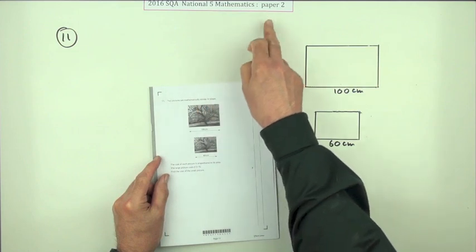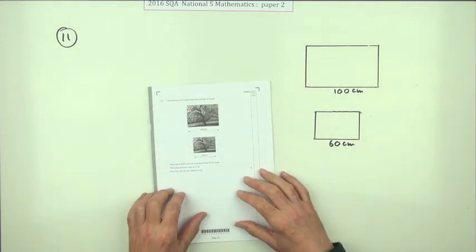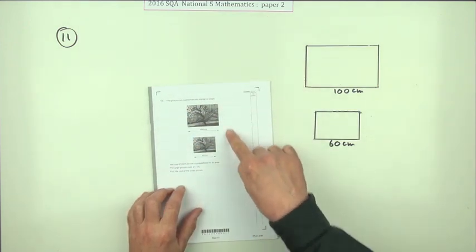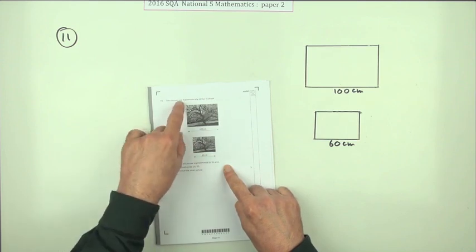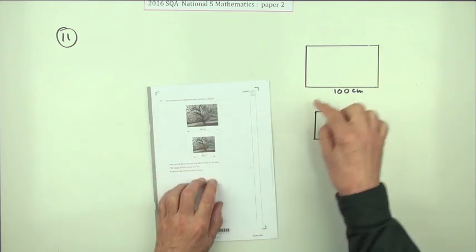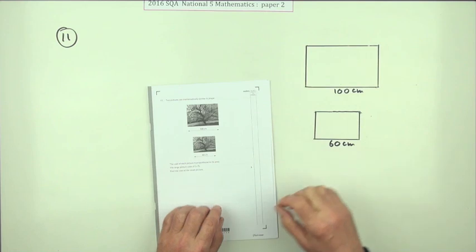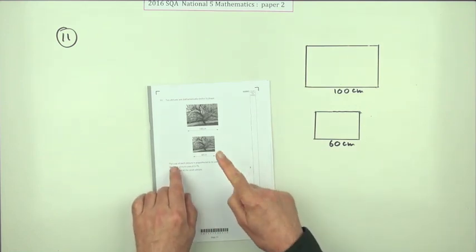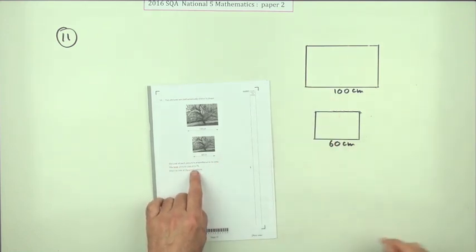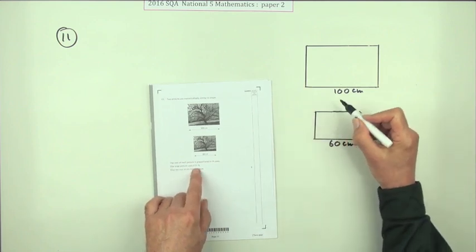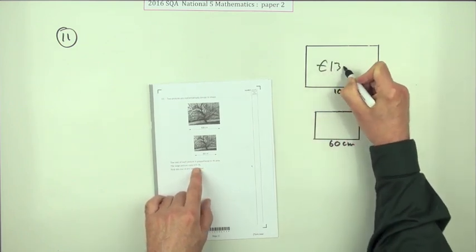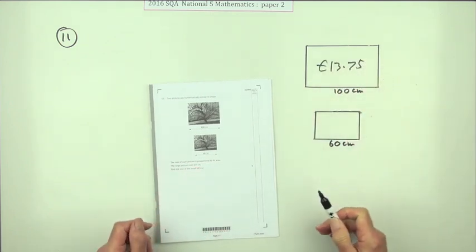Number 11 from paper 2 of the 2016 National 5 Maths exam. Similar shapes: two pictures are mathematically similar, meaning corresponding sides are in the same ratio. The cost of each picture is proportional to its area. The large picture costs £13.75, and the question is for three marks, what's the cost of the small picture?